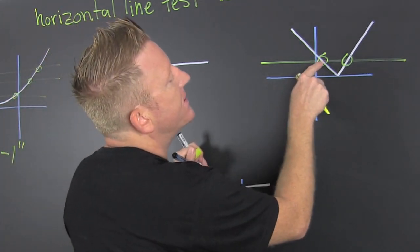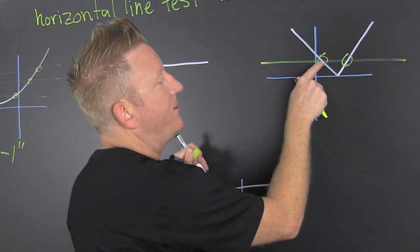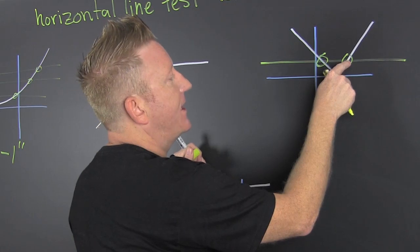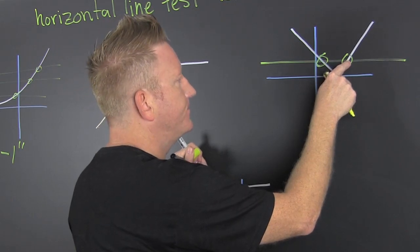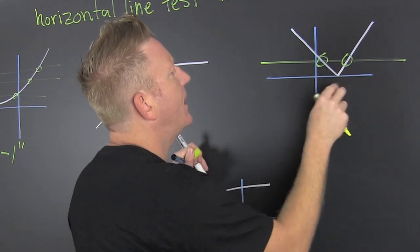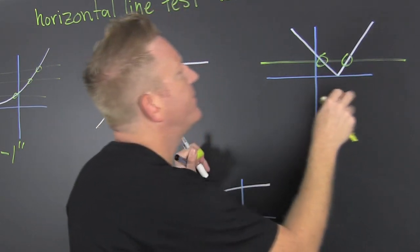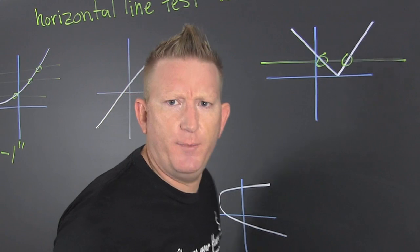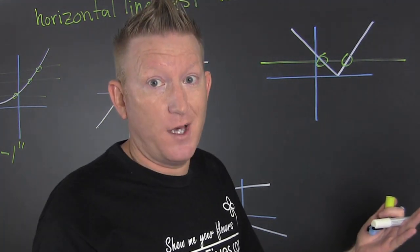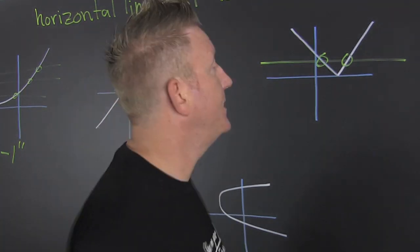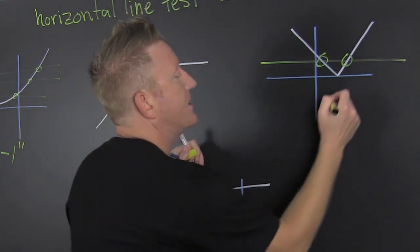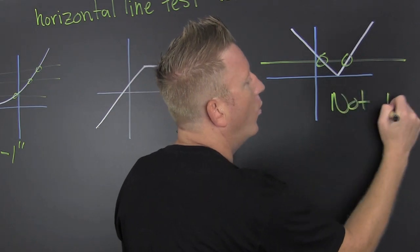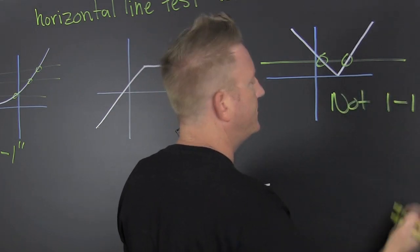It is not one-to-one. Why? Because this second element and that second element — it touches at more than one spot. It doesn't pass the horizontal line test. That is not one-to-one.